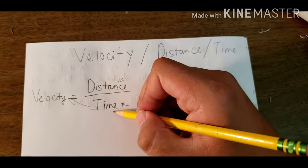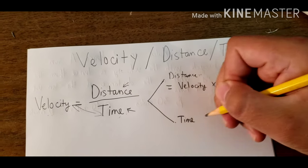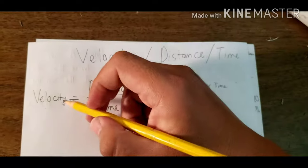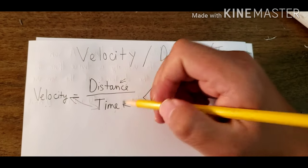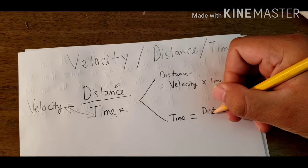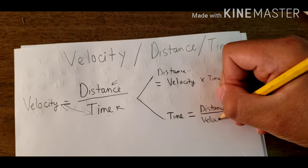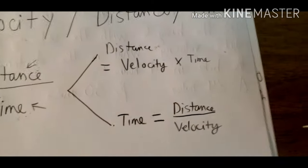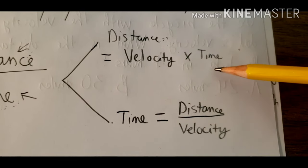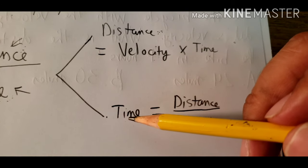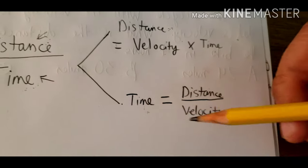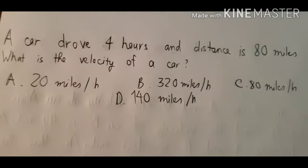If the text asks you to calculate the time, you must know that we have the distance on the numerator and we move the velocity to the denominator, giving us the formula for time. So to summarize: if they ask about distance, use velocity multiplied by time. If they ask about time, use distance divided by velocity.